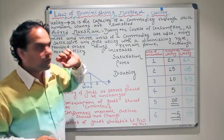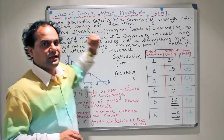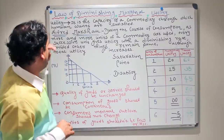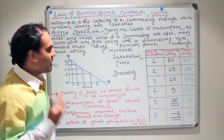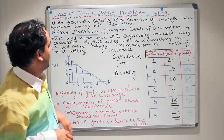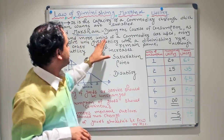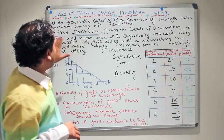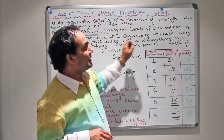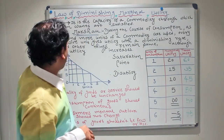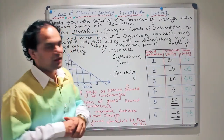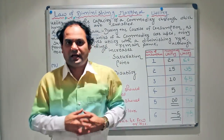Once you have got the picture clear as far as utility is concerned, let's try to understand what the Law of Diminishing Marginal Utility is in economics. In short form it is called DMU. It was given by Professor Alfred Marshall. The definition goes: during the course of consumption, as more and more units of a commodity are used, every successive unit gives utility with a diminishing rate, provided other things remain the same, although total utility increases.